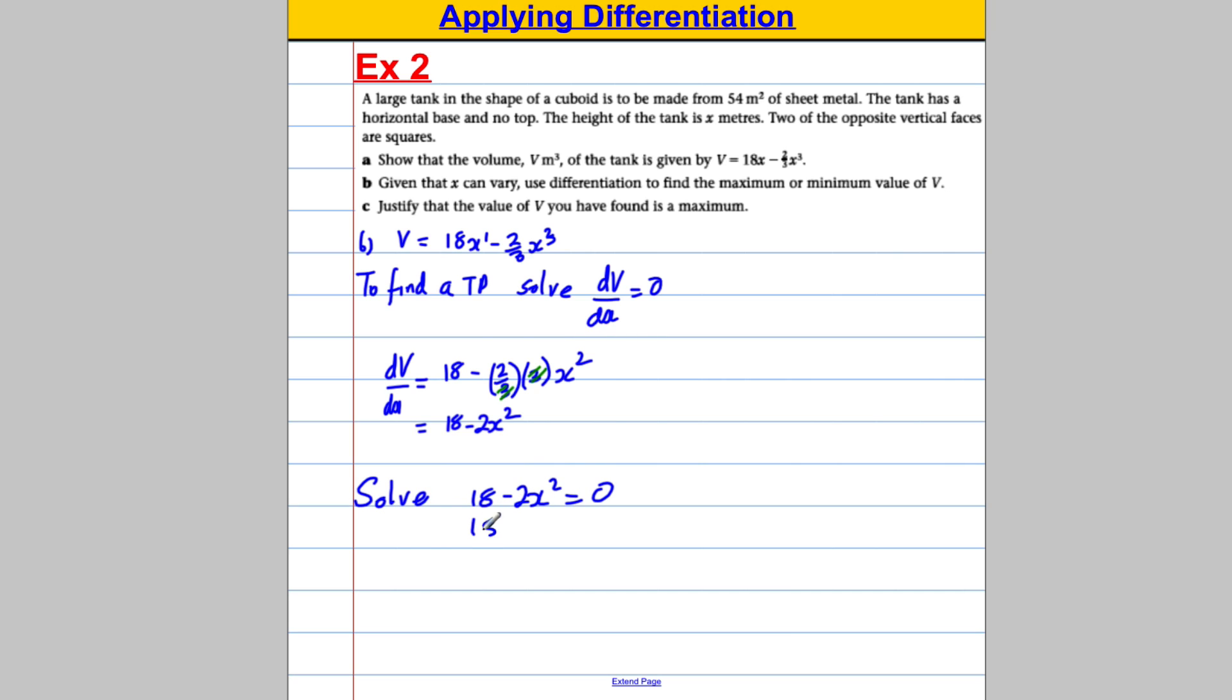So we're going to solve 18 subtract 2x squared equals 0. Add 2x squared to both sides. 18 equals 2x squared. Divide both sides by 2. x squared equals 9. And then, take the square root. I'm going to get x is positive or negative 3. Now, given that x is a height, you have to ignore negative 3. Therefore, x is equal to 3 centimetres. It's actually a value.